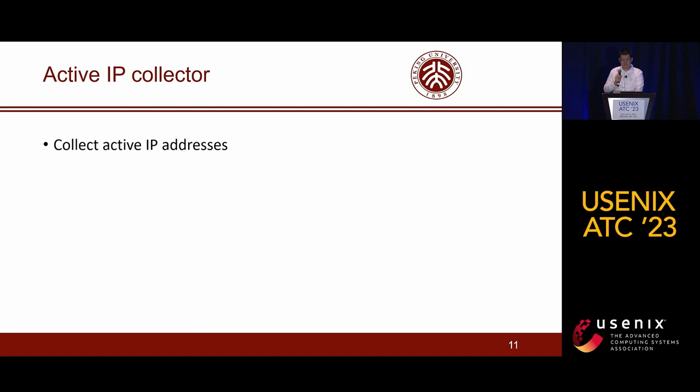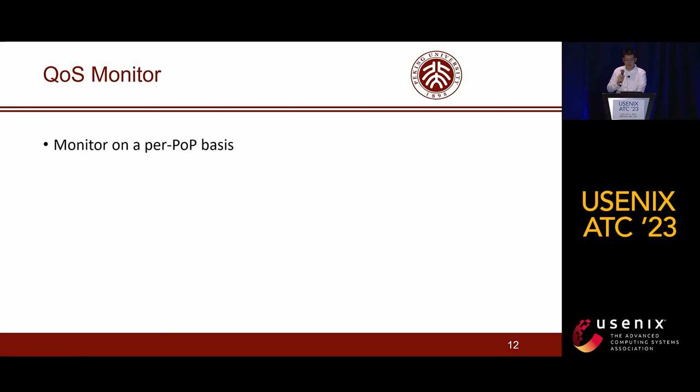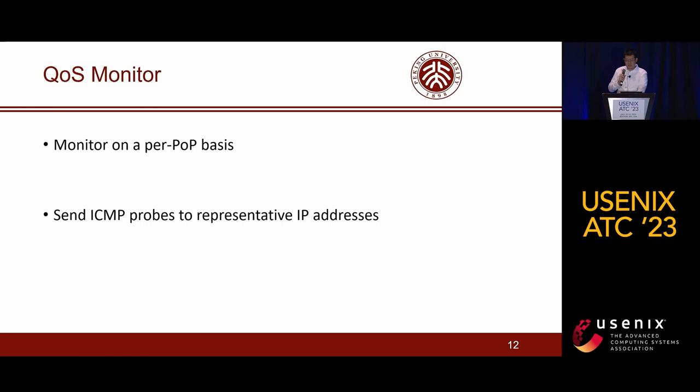The active IP collector collects active IP addresses through ICMP probing. To further reduce probing cost, the collector selects representative IP addresses in each /24 IP prefix. With the selected representative IP addresses, the QoS monitor monitors the quality of cloud service. As Huawei Cloud can serve users from any POP, we need to monitor the QoS on a per-POP basis. Every minute, the monitor sends ICMP probes to each representative IP address, then computes the average packet loss rate of each AS as per-AS QoS.